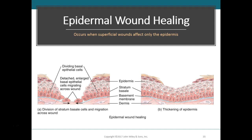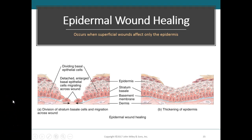Once the cells migrate together, they start undergoing mitosis to create new cells. As they create new cells, new junctions are formed between those cells, creating new layers and layers of tissue until the epidermis is thickened and back to its normal state. It's pretty straightforward — the epidermis heals by creating layer upon layer of new tissue.